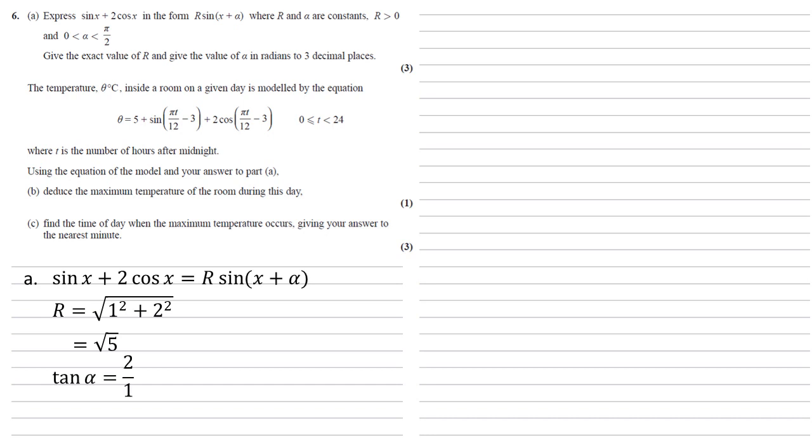To find alpha, we use the result tan alpha equals the coefficient of cos, which is 2, over the coefficient of sin, which is 1, so tan alpha equals 2. Inverse tan of this gives us that alpha is 1.107.